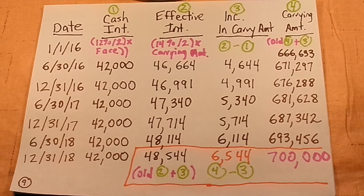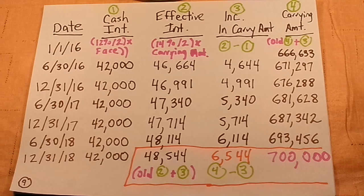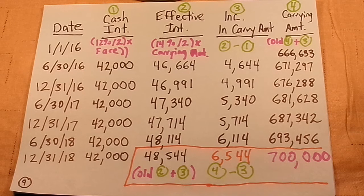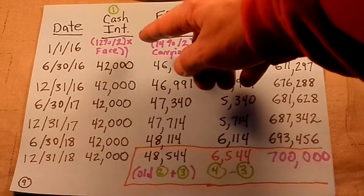On January 1st, the only field that has an entry is the carrying amount, because that was the date we received the cash of $666,633 — everything else would be blank. Every time we pay interest, we pay the stated rate divided by two, because we're paying interest twice a year. The whole year's interest rate is 12%, so the semi-annual rate is 6%, and we multiply that by the face amount of $700,000. So cash interest is $42,000 every time we pay it.